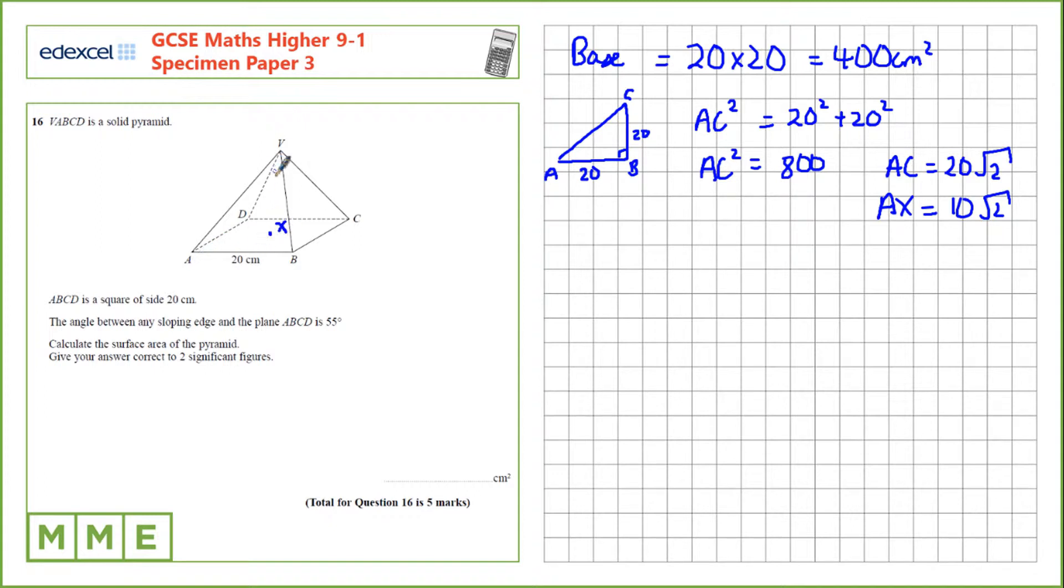Let's draw out this triangle AXV. So A to X to V. We were given that this angle is 55 degrees. We have the right angle here. And that's 10 root 2. We need to know the vertical height, VX. So we're going to have to use trigonometry for this.